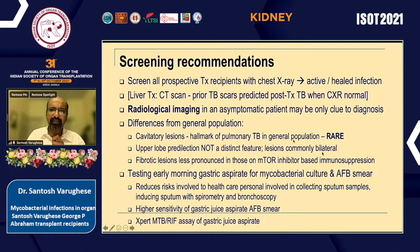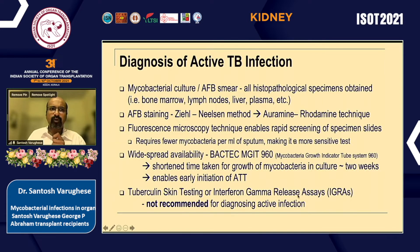Radiological imaging may be the only clue, so we need to look carefully. Cavitary lesions are rare; upper lobe predominance is not a distinct feature; lesions are mostly bilateral fibrotic, and are less pronounced with mTOR inhibitor-based immunosuppression. Gastric juice aspiration for mycobacterial culture and AFB — not often done but found to be useful, with less risk to healthcare personnel — and GeneXpert TB PCR can also be performed on gastric juice aspirate. Fluorescence microscopy and MGIT culture improve test sensitivity with growth occurring as early as two weeks. IGRAs and tuberculin skin testing are not recommended for diagnosing active infection.